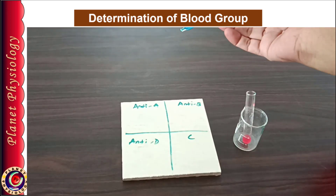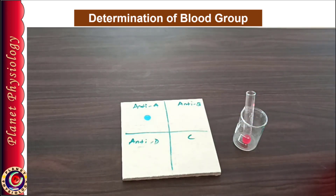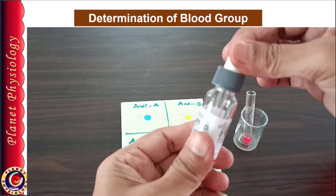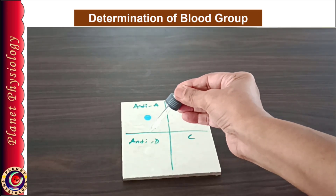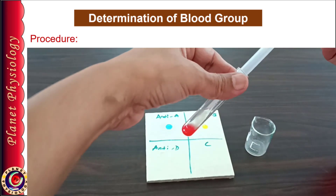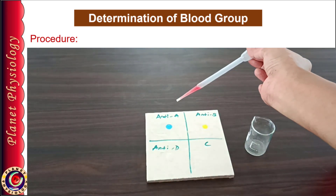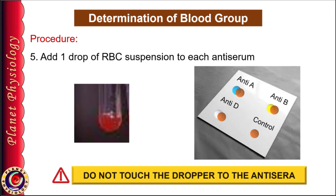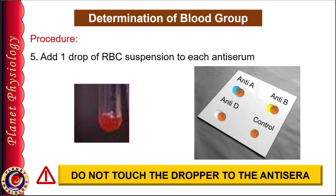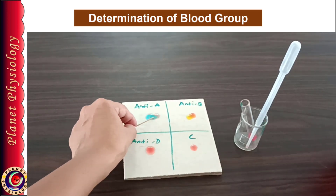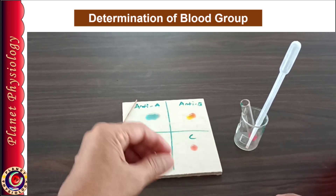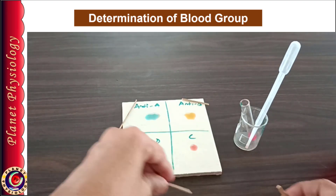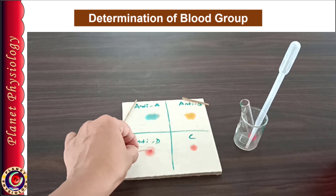Now on the tile, take 1 drop of anti-serum A in the section labeled anti-A, then 1 drop of anti-B in the section labeled anti-B, and 1 drop of anti-D in the compartment labeled anti-D. With the help of a dropper, add 1 drop of RBC suspension to each of these anti-serums and also 1 drop in the control section. Take precaution that the tip of the dropper should not touch any of the anti-serum. Now mix the suspension and anti-serum with the help of a stick or toothpick, using a separate stick for each anti-serum. After mixing, place the stick in the corresponding quadrant without touching the contents — this will help you remember which stick was used for which anti-serum.